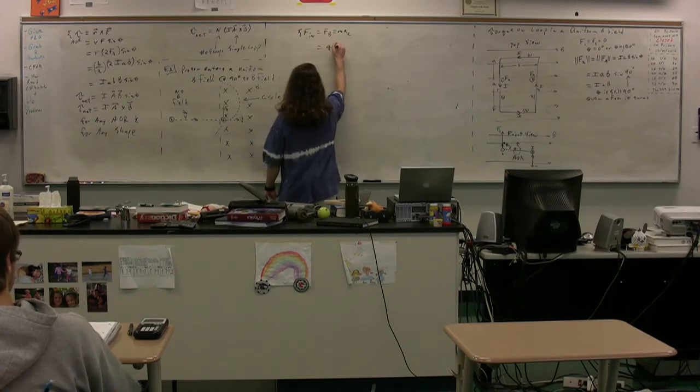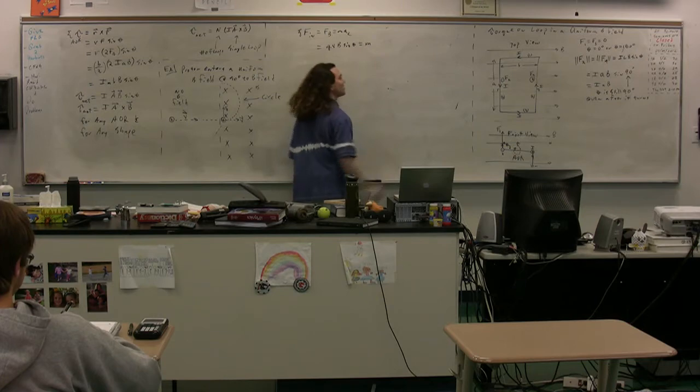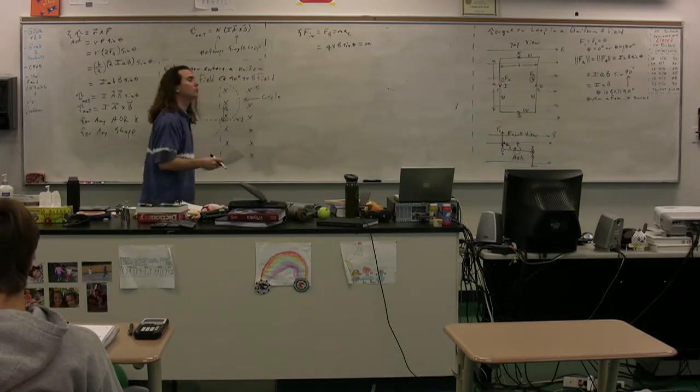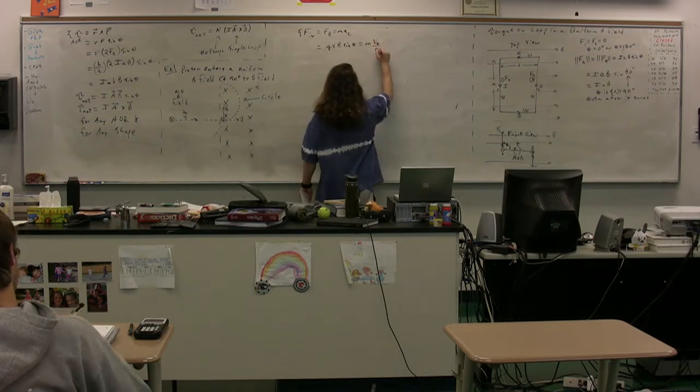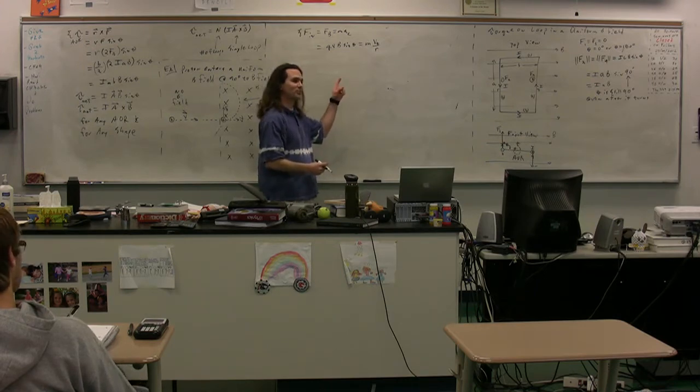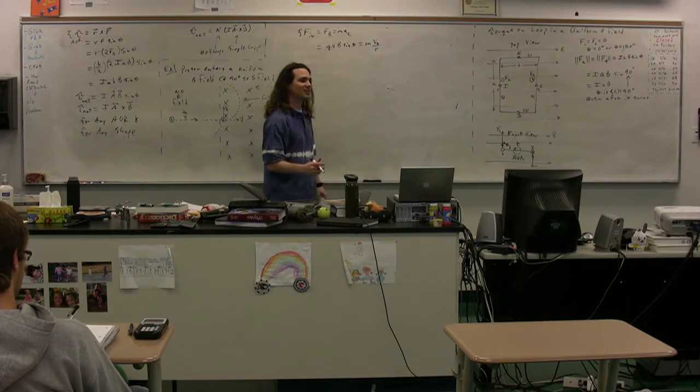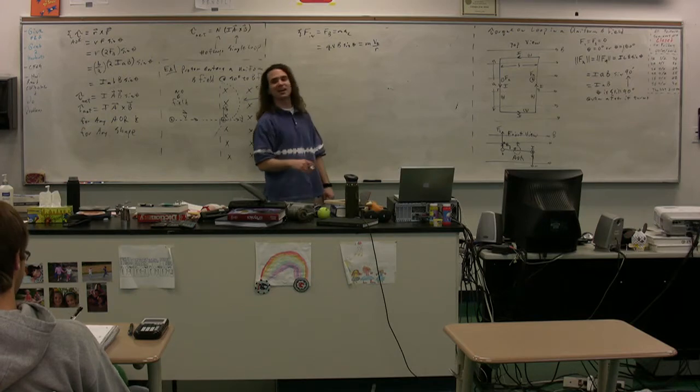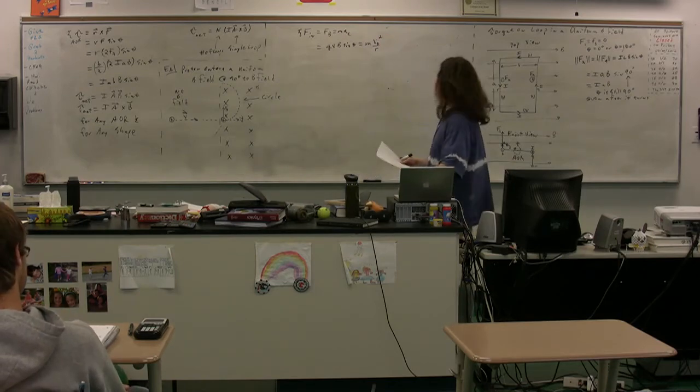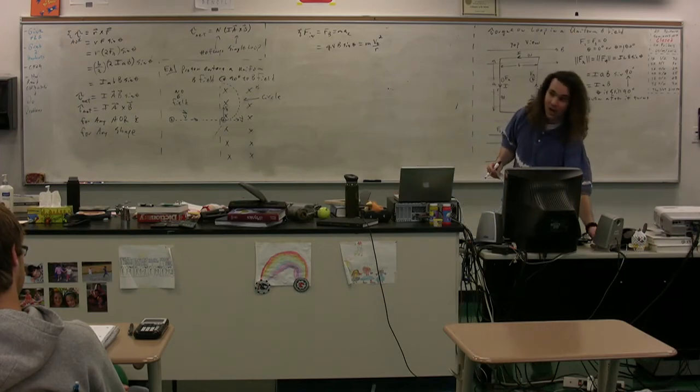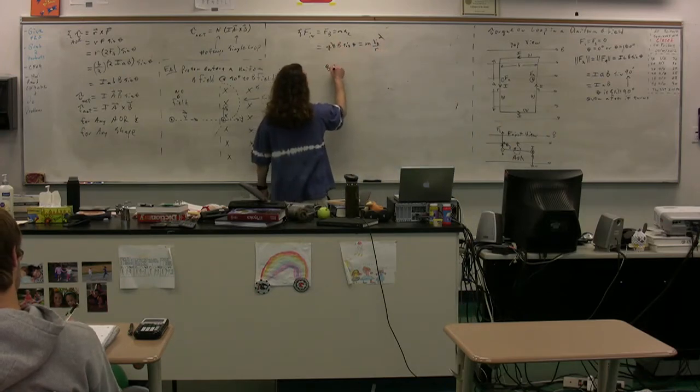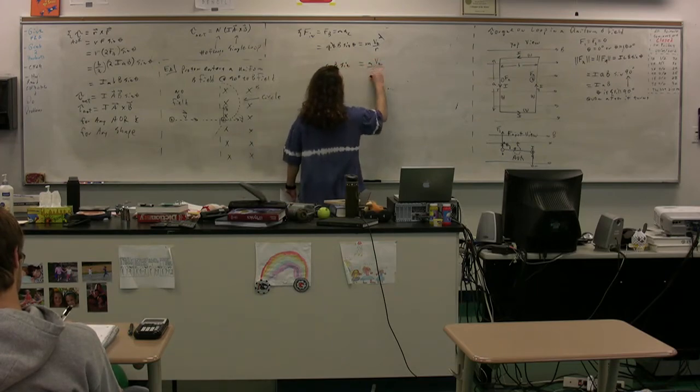So, magnetic force: Q, V, B, sine theta equals mass times centripetal acceleration. We have a couple of choices for centripetal acceleration. Eric Staisley, give me both. V tangential squared over R or angular velocity squared times R. What did we forget? V tangential squared. That's the tangential velocity squared.